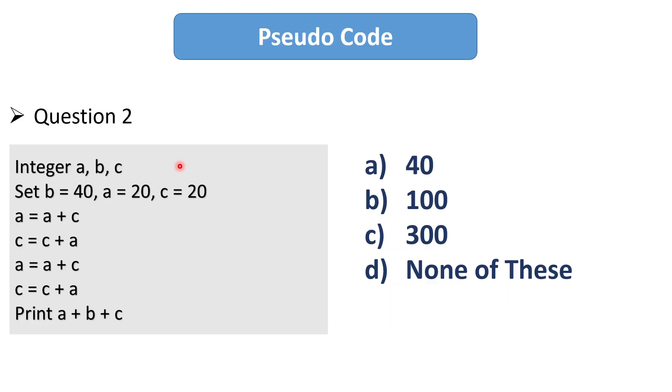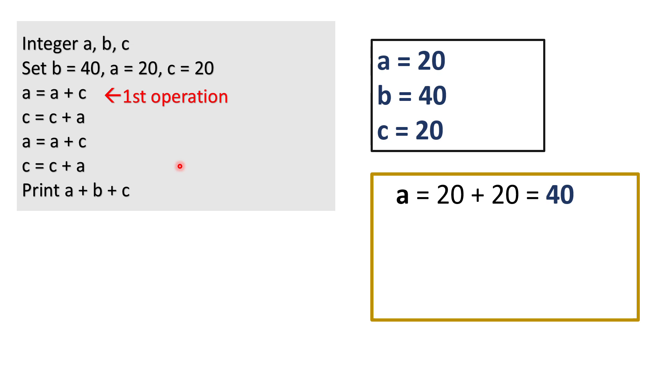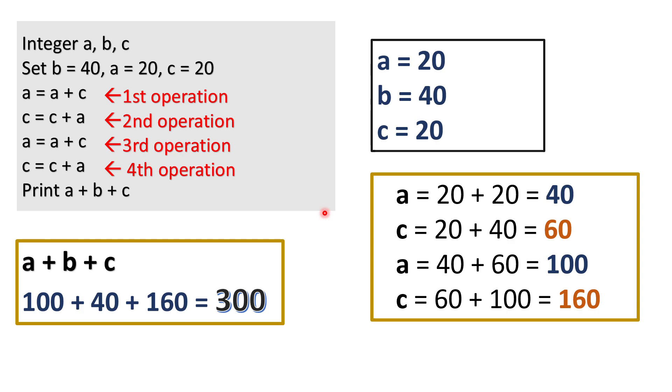Now the next question is this and its answer is 300. So let's see how we can solve this question. The initial value for a is 20, b is 40 and c is 20. So our first operation is a plus c which is equal to 40 and this 40 will assign to a. So the updated value of a is equal to 40. Now our next operation is c plus a which will be equal to 60 and the 60 will assign to c. So the updated value for c is 60. Now the third operation which is a plus c. So the value of a plus c will be 100 and it will get assigned to a. So the updated value of a is 100. And in the fourth operation we have to add c plus a which is equivalent to 160. And in the last we have to print a plus b plus c. So their sum will be 300. So this is how we can solve this question.